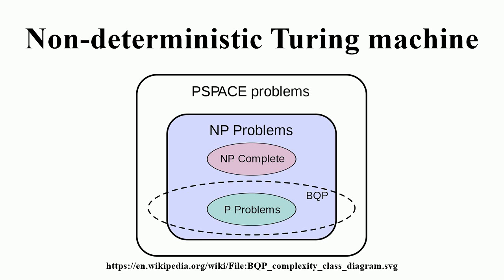This exponential blowup is considered a general property of simulations of NTMs by DTMs, and relates to the most famous unresolved question in computer science: the P equals NP problem. An NTM also has the property of bounded non-determinism — if an NTM always halts on a given input tape T, then it halts in a bounded number of steps and can only have a bounded number of possible configurations.